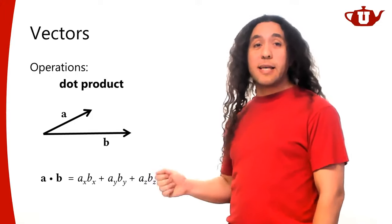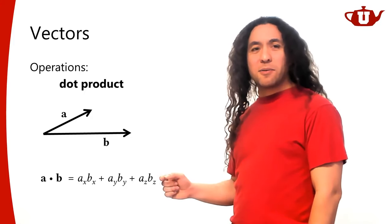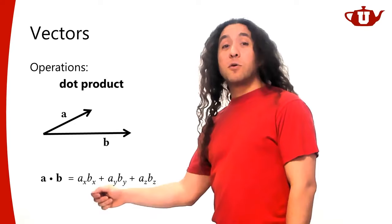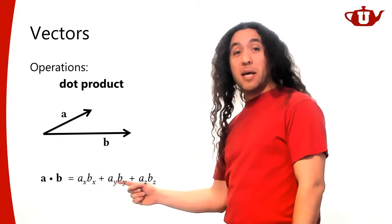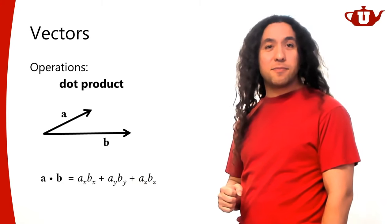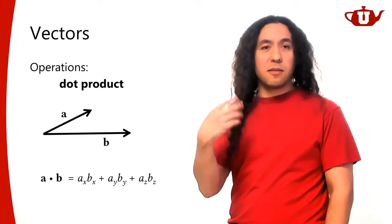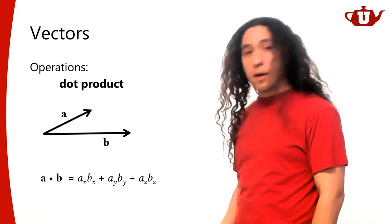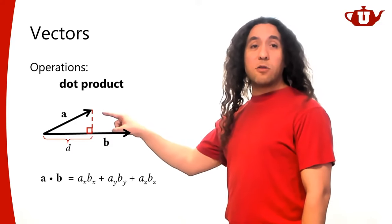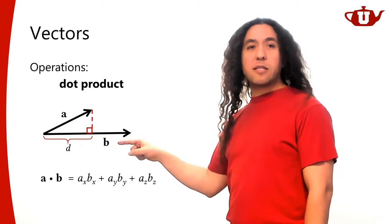The dot product is used quite extensively in computer graphics. The dot product of a vector with itself — a dot a — gives the squared length of the vector. That's also used a lot for various notation. Another important use: if I want to know the projection of vector a along direction b, I can use the dot product to compute that length d.